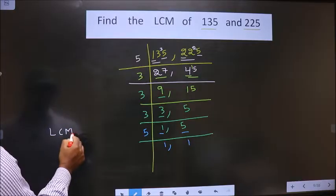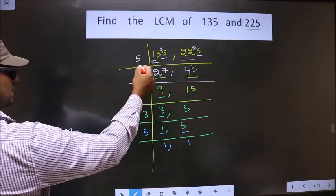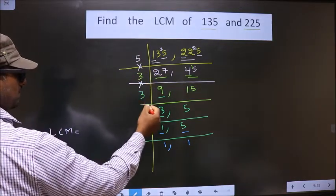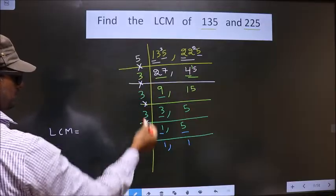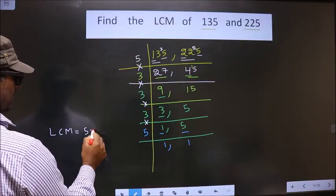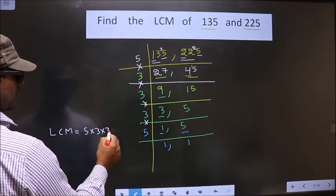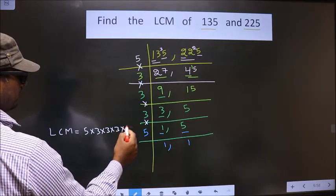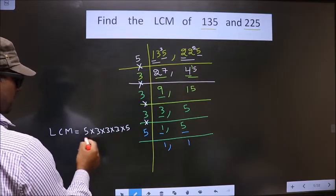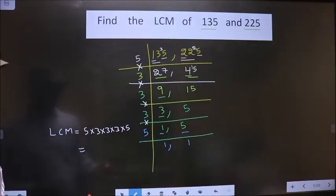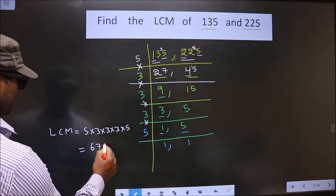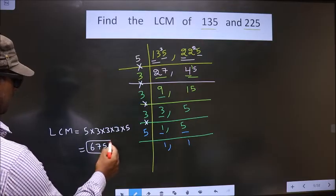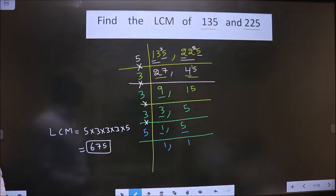So now our LCM is the product of these numbers. That is 5 into 3 into 3 into 3 into 5. You multiply all these numbers. You get 675. Now, this is your answer.